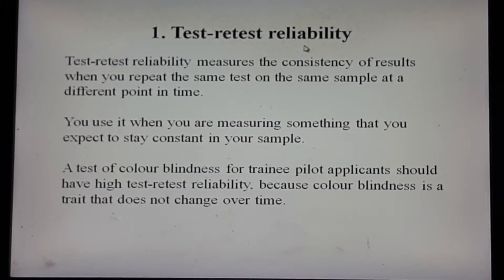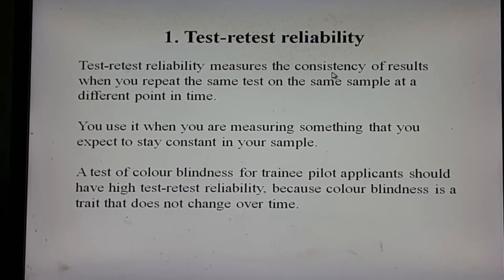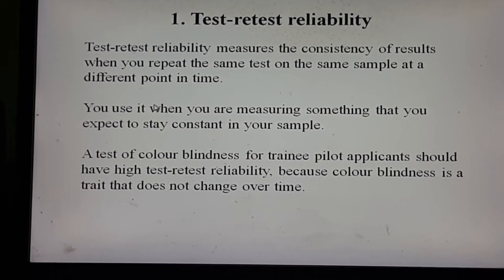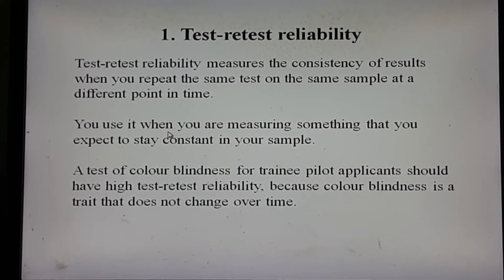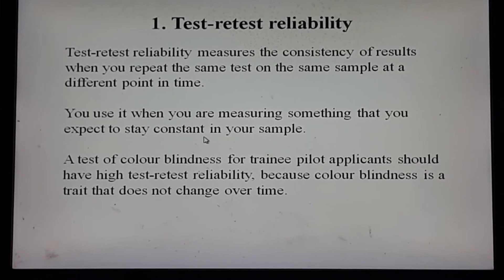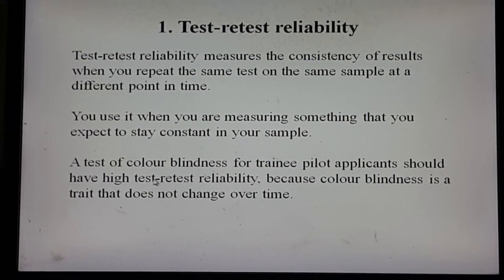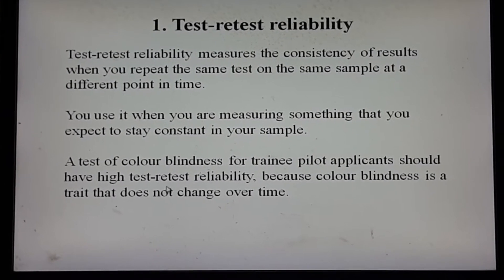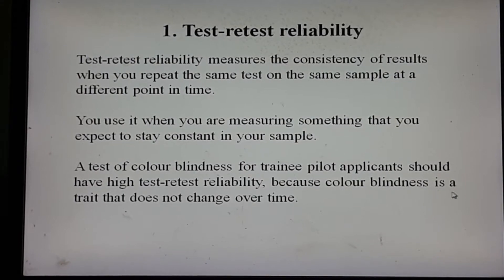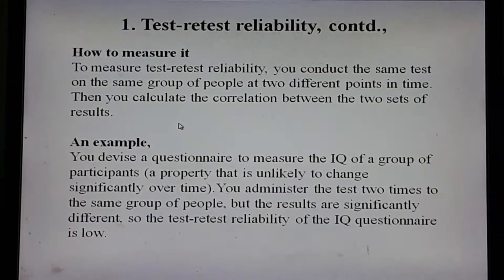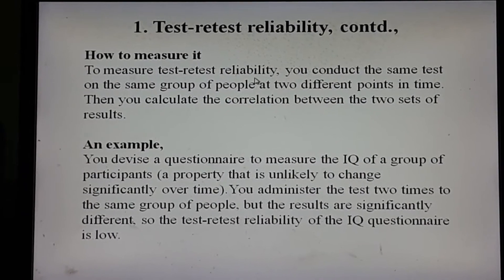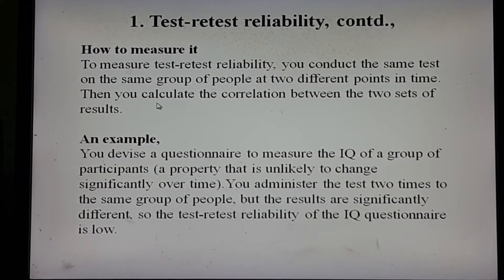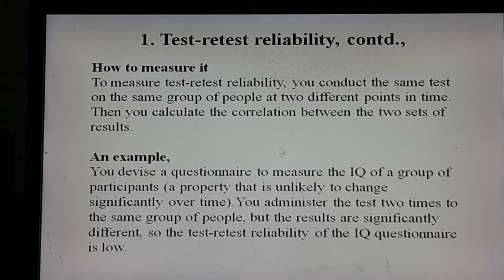Test-retest reliability measures the consistency of results when you repeat the same test on the same sample at a different point in time. You use it when you are measuring something that you expect to remain constant in your sample. For example, a test of color blindness for trainee pilot applicants should have high test-retest reliability because color blindness is a trait that does not change over time. To measure test-retest reliability, you conduct the same test on the same group of people at two different points in time, then calculate the correlation between the two sets of results.